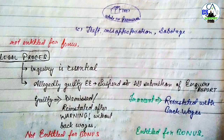जब कभी भी कोई employee charge किया गया, मतलब उस पे इल्जाम लगाया गया - Section 9 में जो तीन चीज़ें लिखी गई हैं जैसे fraud, riotous/violent behavior, misappropriation या sabotage of the property का इल्जाम लगाया गया किसी employee पे - तो inquiry essential हो जाता है। Inquiry होना चाहिए।